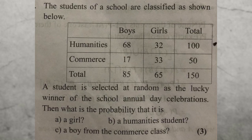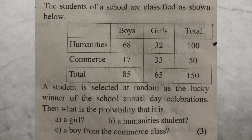The students of a school are classified as humanities and commercial. A student is selected at random as the lucky winner of the school annual day celebration. Then what is the probability? The boys have a certain population and the girls have another. The probability values given are 90%, 65%, and 60, with total 150 and 65.